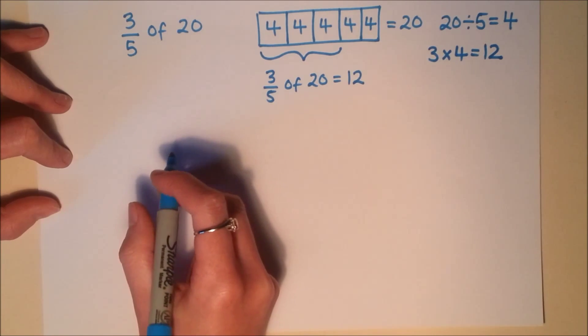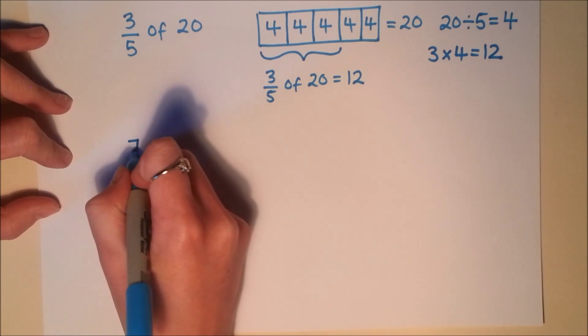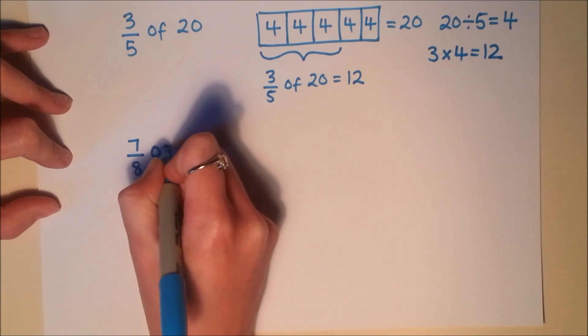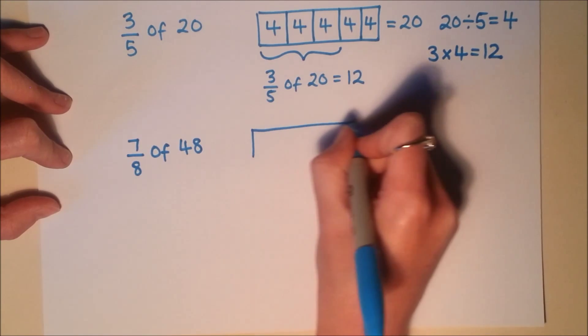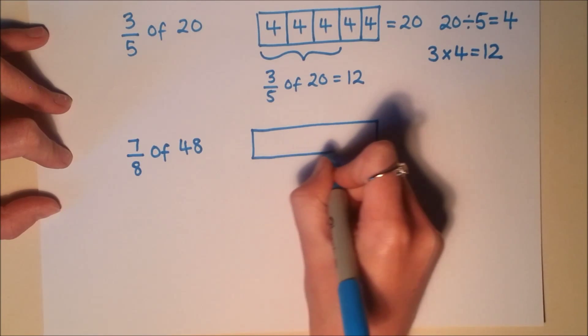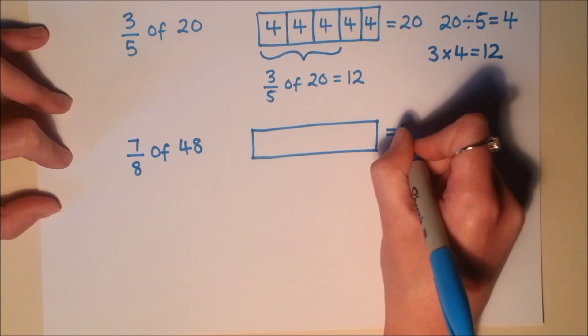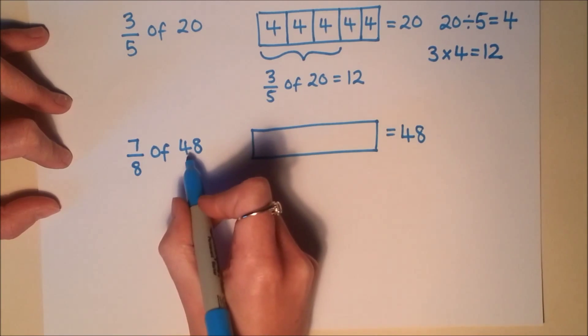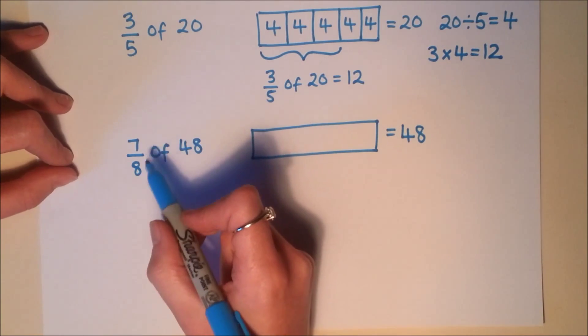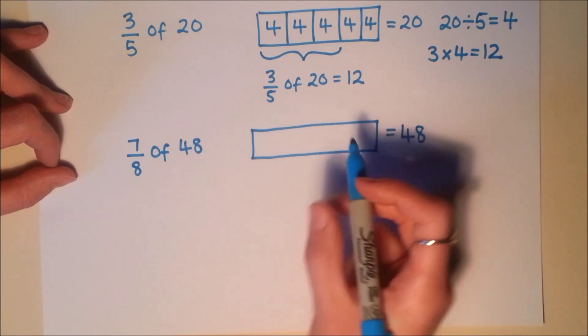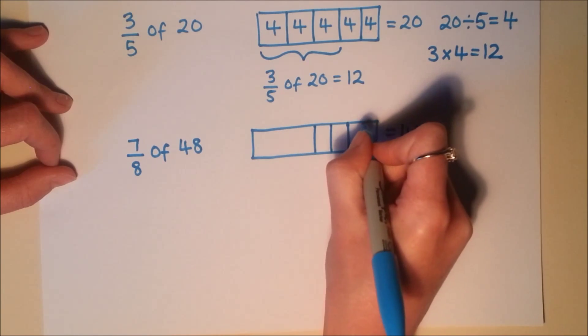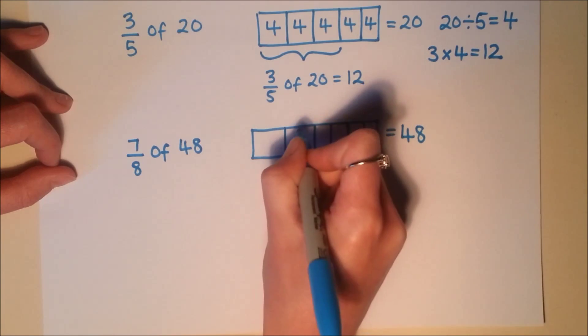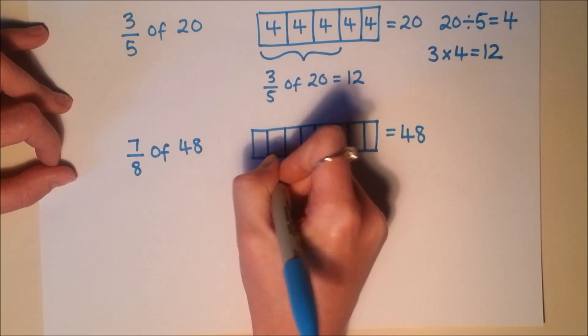Let's have a look at another one. What about 7 eighths of 48? So again, I'm going to draw a rectangle to represent my full amount. That full amount is worth 48. My denominator is 8, so I'm going to try and split this into 8 equal pieces. So you can see I've done halves, then quarters. And split each quarter in half again, that gives me 8. It's quite a nice way of getting eighths.